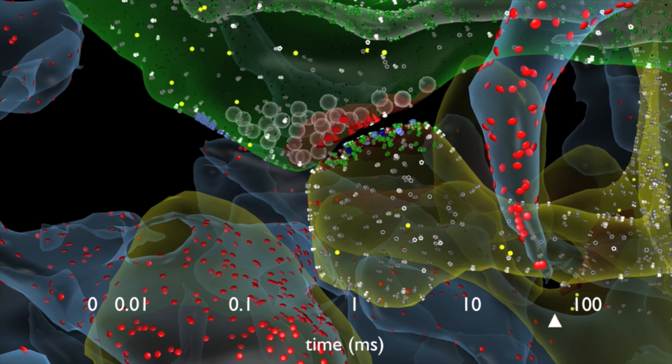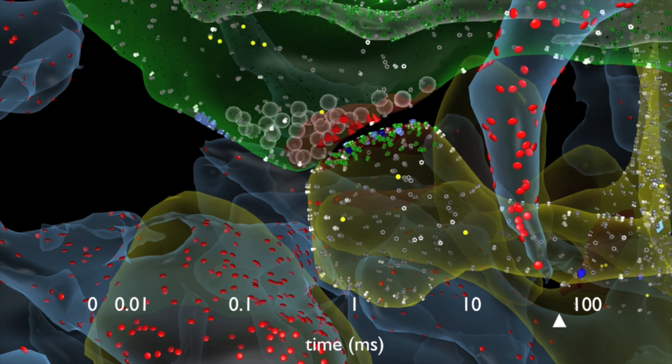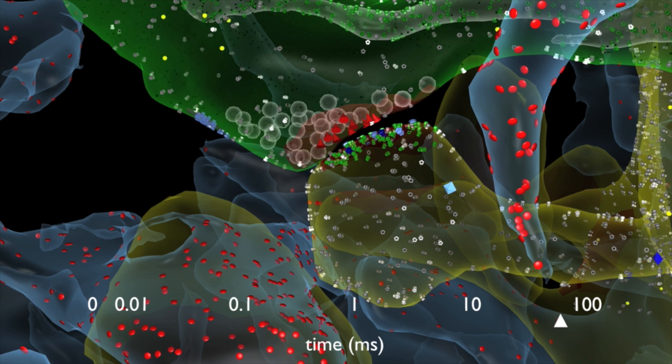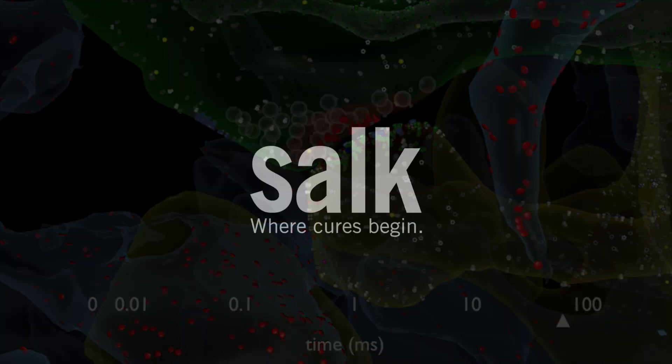The new Salk research also solves a long-standing question as to how the brain is so energy efficient and can help engineers build computers that are powerful but also conserve energy. Learn more at Salk.edu.